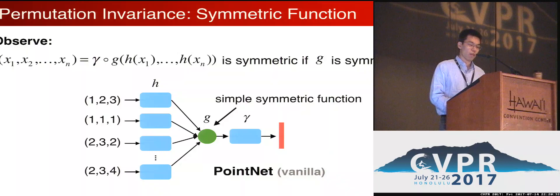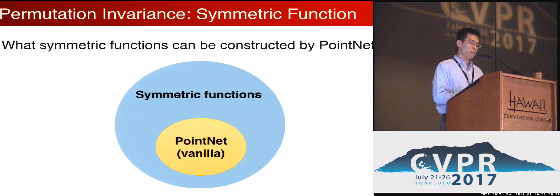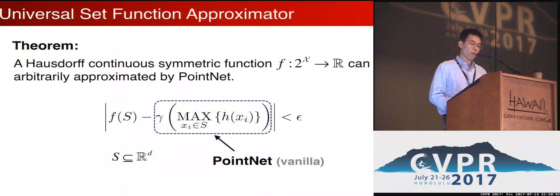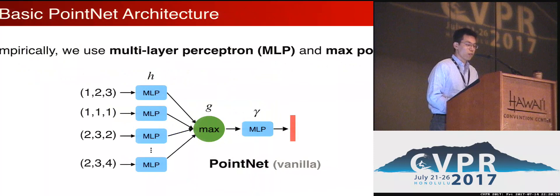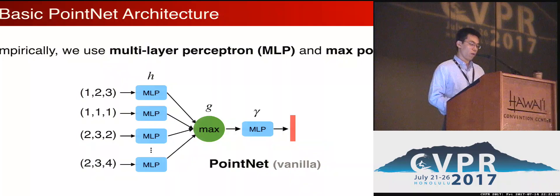A network in this structure is guaranteed to be invariant to input order. Interestingly, we can show that any continuous symmetric function can be arbitrarily approximated by PointNet — of course, higher accuracy requires more internal neurons, but this is still very good news; we are on the right direction. Empirically, we use multi-layer perceptron networks for functions H and gamma, which are fully connected layers with ReLU and batch normalization. Note that function H is shared across all points. We use max pooling as symmetric function G. While we also tried average pooling and weighted average pooling, we found that max pooling has the best performance in our experiments.